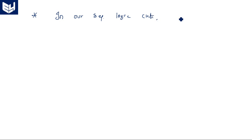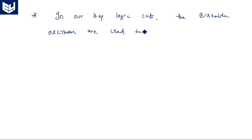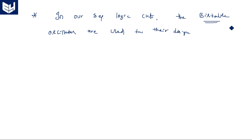In sequential logic circuits, bistable oscillators are used for their design. Among astable, monostable, and bistable types, we most commonly use the bistable multivibrator for sequential logic circuits. In the next video, I will explain the behavior of the bistable multivibrator using a schematic circuit diagram.